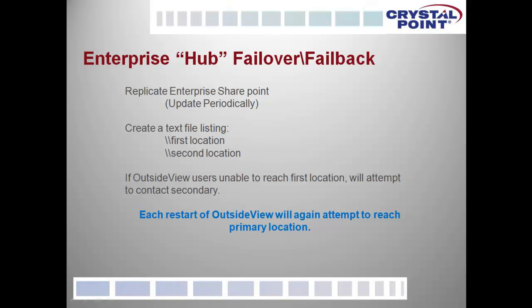We've given a similar capability within our enterprise architecture. Enterprise architecture is a star network with a central hub, and you can now replicate that shared hub location with a file specifying a primary and secondary location. That gets automatically distributed to end users, and as each user starts OutsideView, if it cannot access the primary hub, it will automatically fail over to the secondary hub for disaster recovery. Each time you restart OutsideView it will again try the primary location, providing both failover and failback at the enterprise sharepoint level.